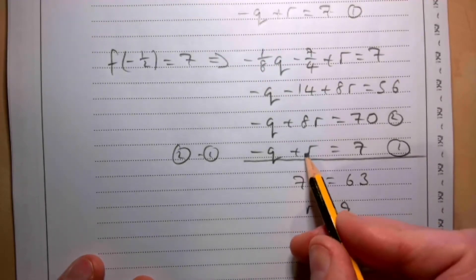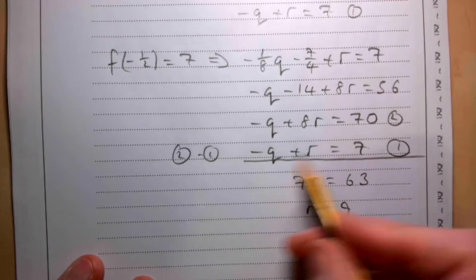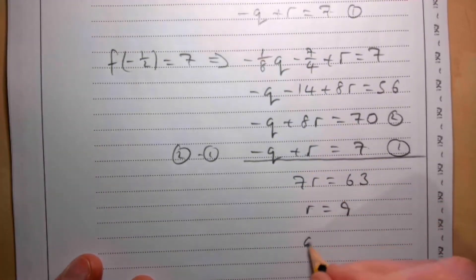And if that's 9, that gives me -q is -2, which means q is 2.